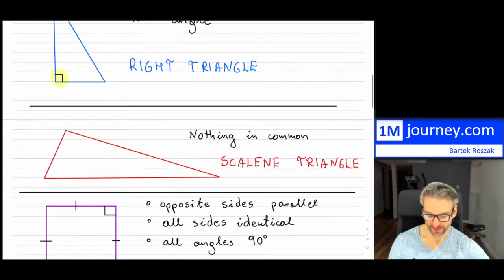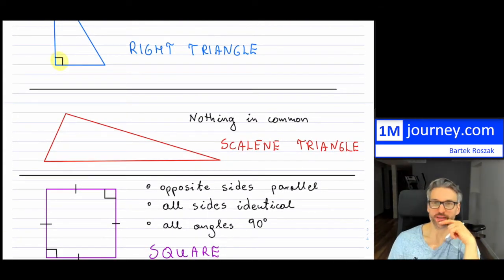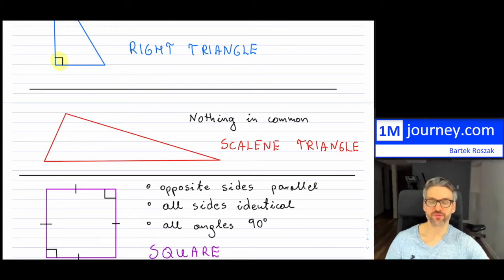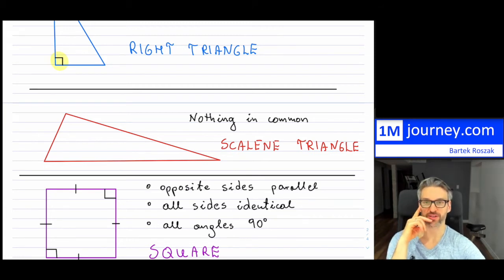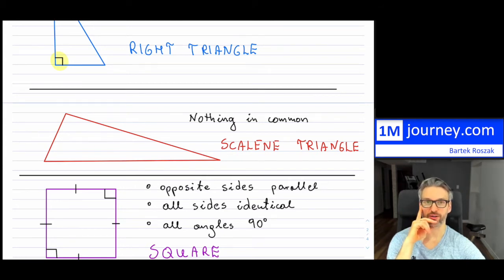When nothing is in common in a triangle, we call it a scalene triangle. Those are the different types of triangles you might run into, and we need to know these properties if we want to identify them from a given example drawing on a Cartesian plane or from just points.